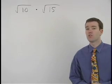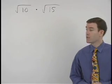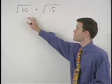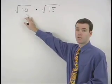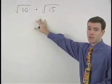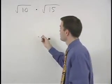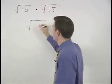To multiply two square roots together, simply multiply the numbers inside the square roots together. So root 10 times root 15 is root 150.